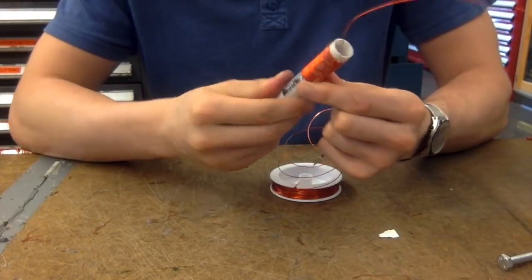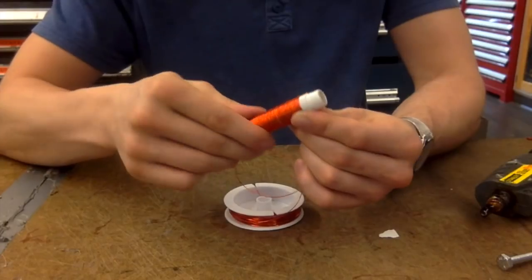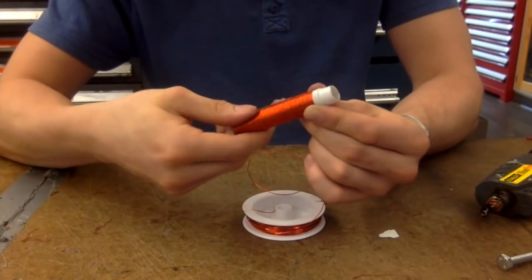As you can see, to keep the coil from unwinding, I periodically added hot glue along the length of the coil. This will come off later.